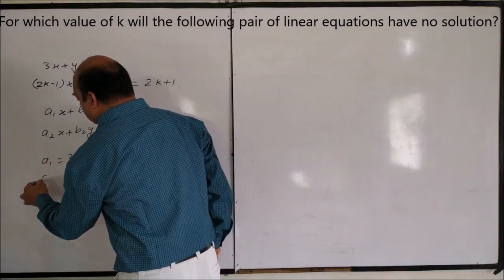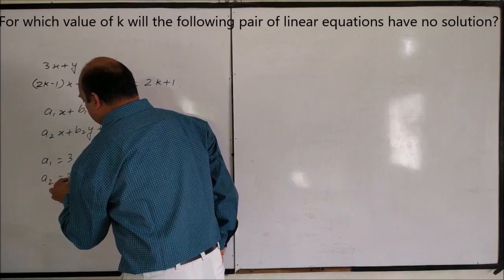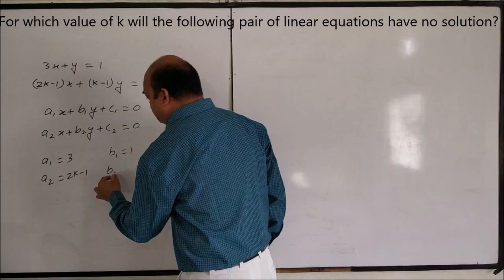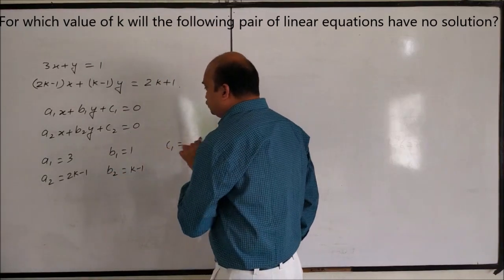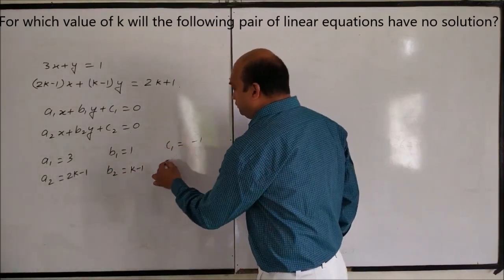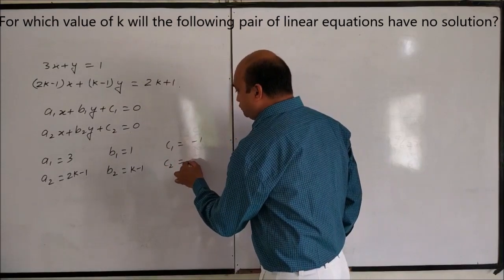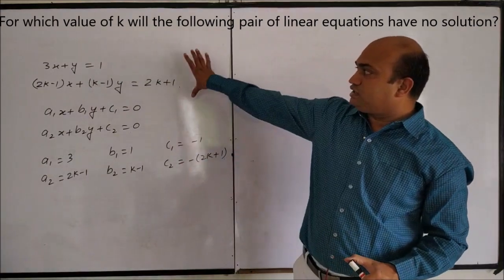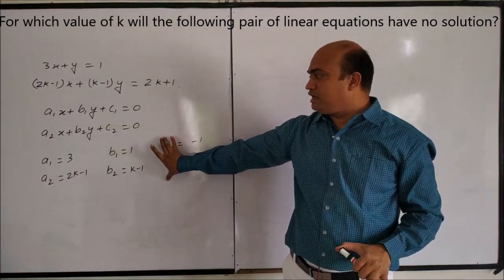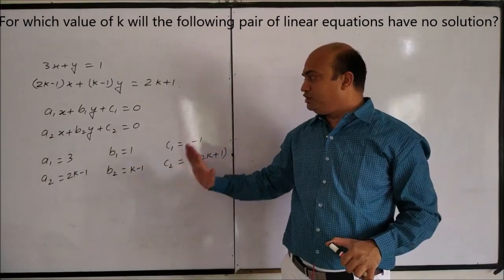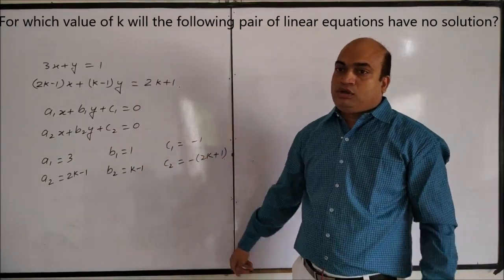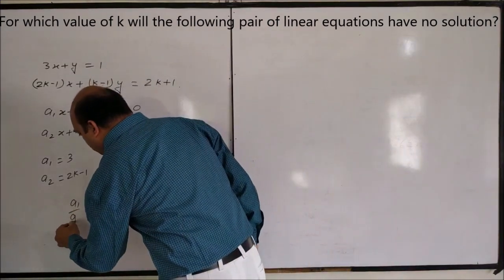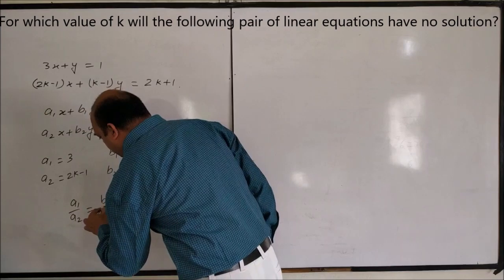By comparing, we get: a1 is 3, a2 is 2k minus 1, b1 is 1, b2 is k minus 1, c1 is minus 1, and c2 is minus 2k plus 1. So by comparing the given equations with the standard equations we get a1, a2, b1, b2, c1, c2 in this form.